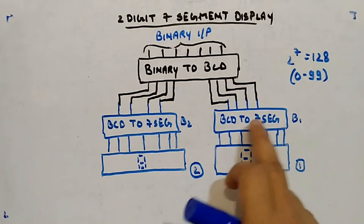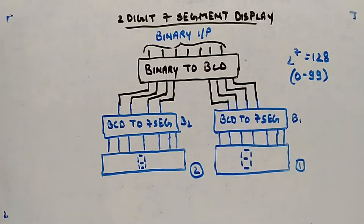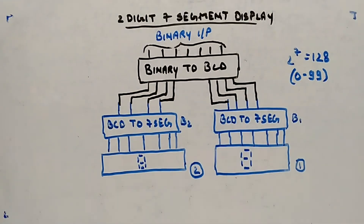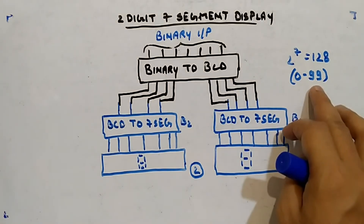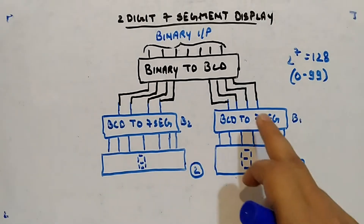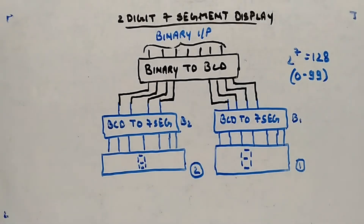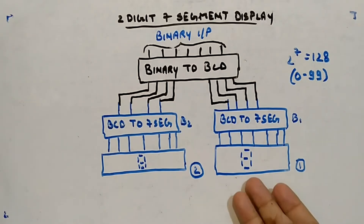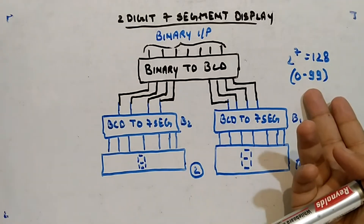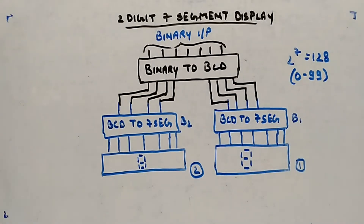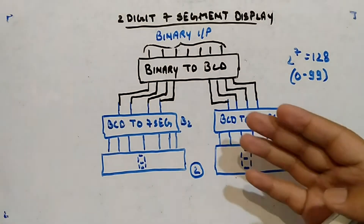B1 is your first BCD to seven segment converter. Now for a two-digit seven segment display, we want to count between 00 to 99. This digit will go 0 to 9 and this digit will go 0 to 9. With one display you can count 0 to 9, but with two you can count up to 99.